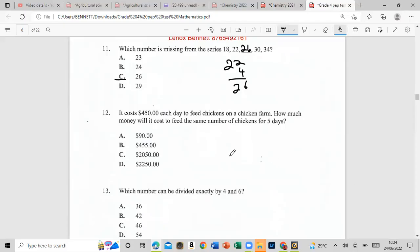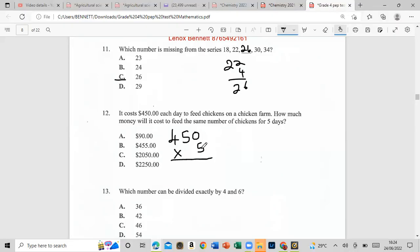It costs $450 each day to feed chickens on a chicken farm. How much money will it cost to feed the same number of chickens for five days? All we have to do is we can either add 450 five times or we could just multiply. 450 times 5, five times zero is zero, five times five is 25. Our answer would be D, $2,250.